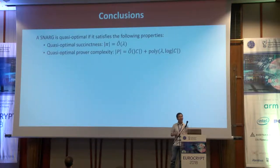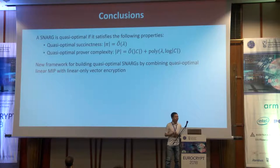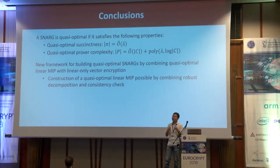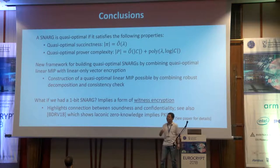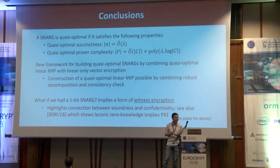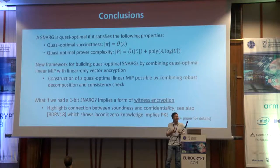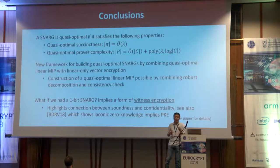To wrap up: in this talk, we focused on a notion of quasi-optimality for succinct non-interactive arguments — argument systems that simultaneously minimize the proof size and the prover complexity. We gave a new framework for building quasi-optimal SNARKs by combining linear MIPs with linear-only vector encryption. We gave a construction of a quasi-optimal linear MIP using a robust decomposition and a consistency check mechanism. In the paper, we also explore what happens when we push succinctness to the limit — a one-bit SNARK that provides soundness with one bit turns out to have surprising connections and implies a form of witness encryption useful for numerous cryptographic applications, highlighting a connection between soundness and confidentiality. There is also an upcoming work by Berman et al. at Crypto this year exploring similar connections.